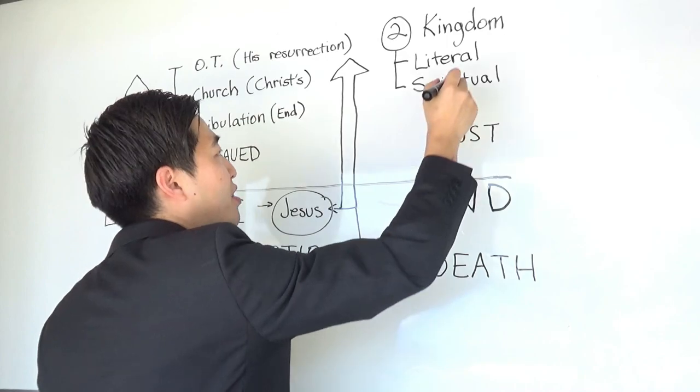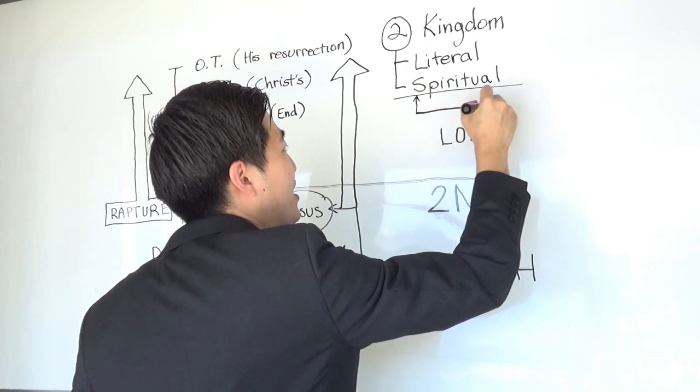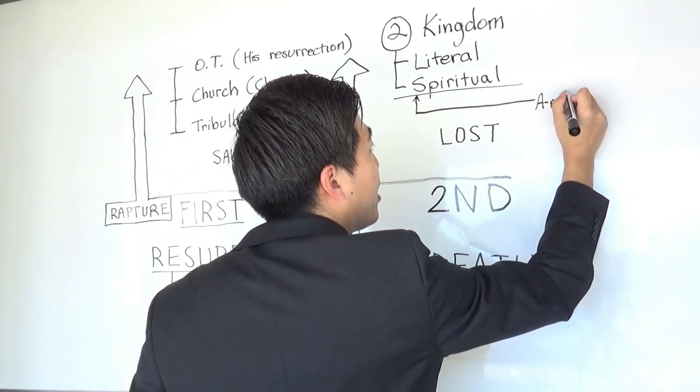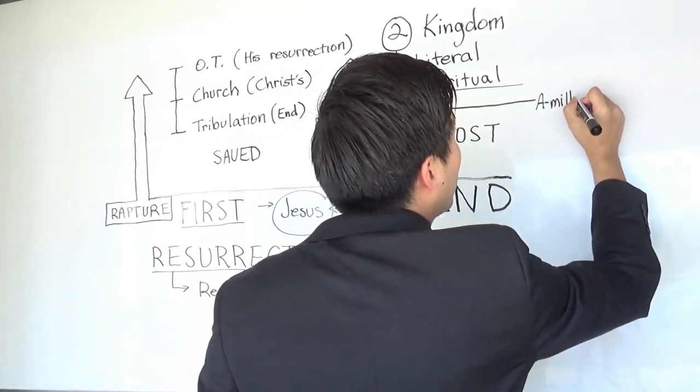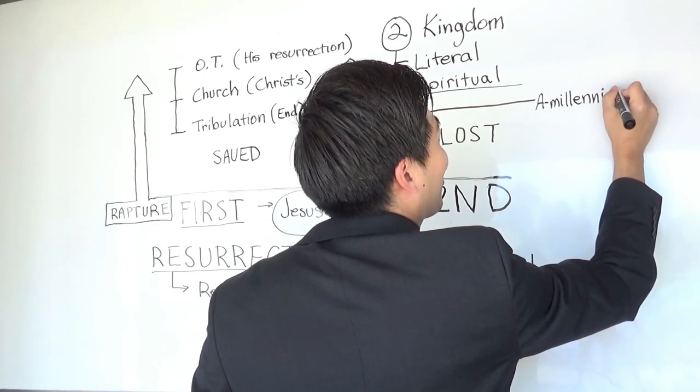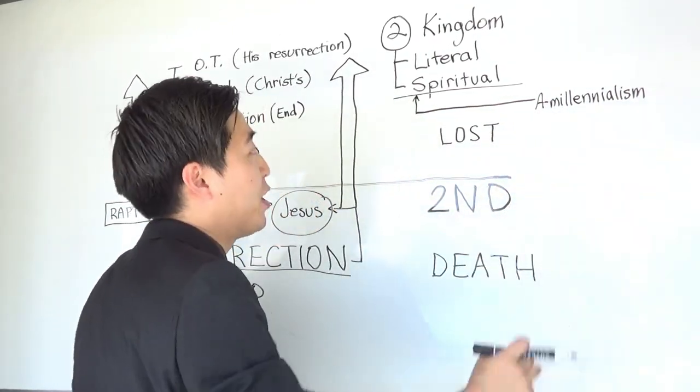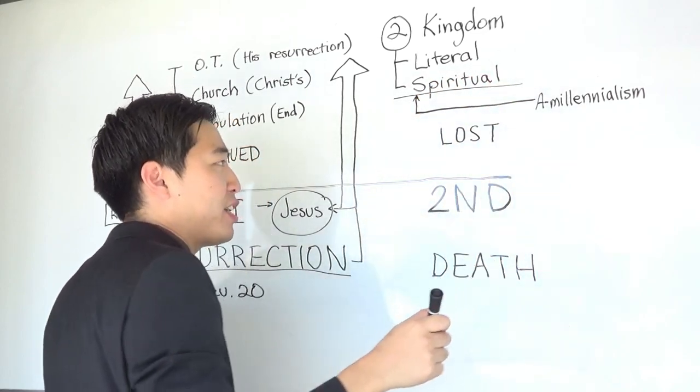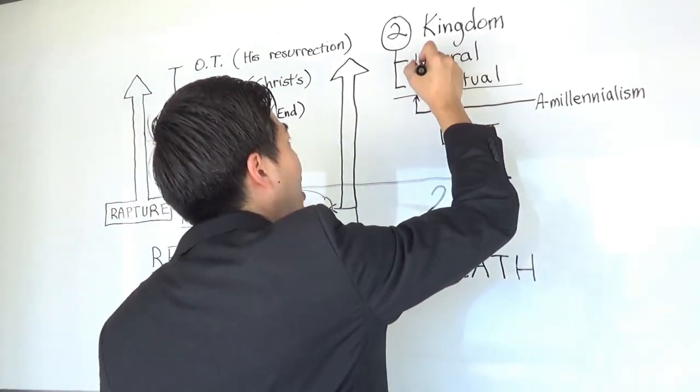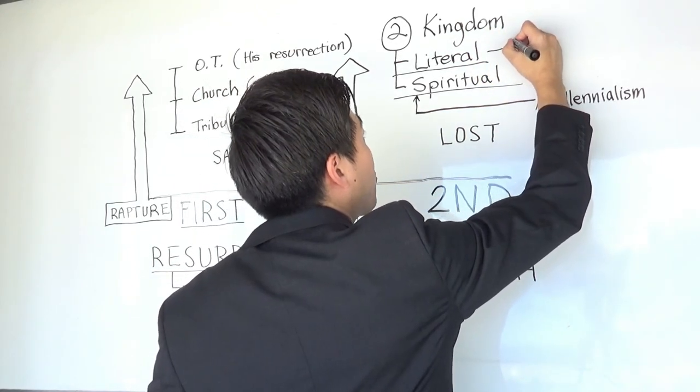So, the amillennialists, they're only looking at one kingdom. This is all they're looking at. They're not dispensationalists. Dispensationalists, we believe over here, let me know when I'm out of bounds. So, amillennialism, they spiritualize the kingdom that currently what we're living in is the millennial reign of Jesus. No, the millennial reign of Jesus Christ is this one over here, and this one is future. This is why we're premillennial.